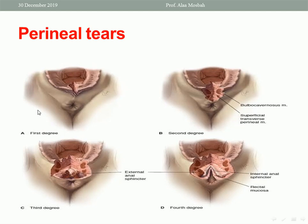To recap the four degrees of perineal tears: third and fourth degree, which reach the anal sphincter, are the most dangerous types. First degree involves vaginal skin and perineal skin only. Second degree involves the vaginal wall, perineal skin, subcutaneous fascia, and perineal muscles. Third degree also involves the anal sphincter. Fourth degree involves the vaginal wall, perineal skin, subcutaneous tissue, perineal muscles, anal sphincter, and anal wall.